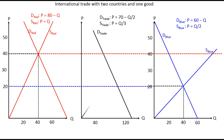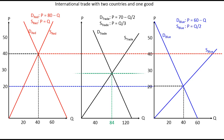Drawing these two lines in black, we see that the equilibrium in the common market gives us a quantity of 84. We started with equilibrium quantities of 40 in both red and blue country, so international trade gives us a higher total quantity of 84 instead of 40. The international market price is equal to 28.